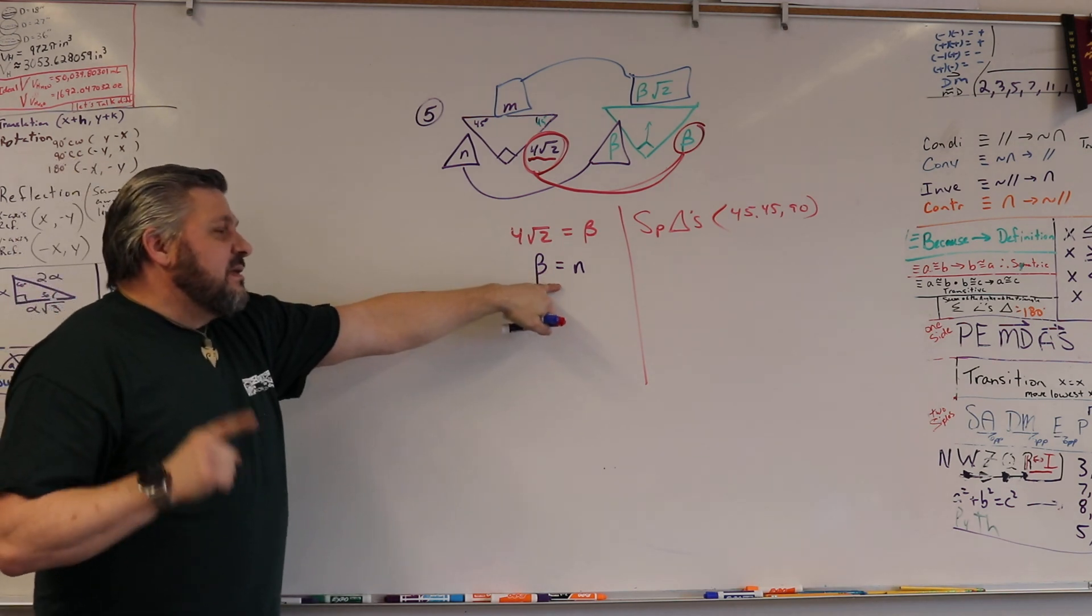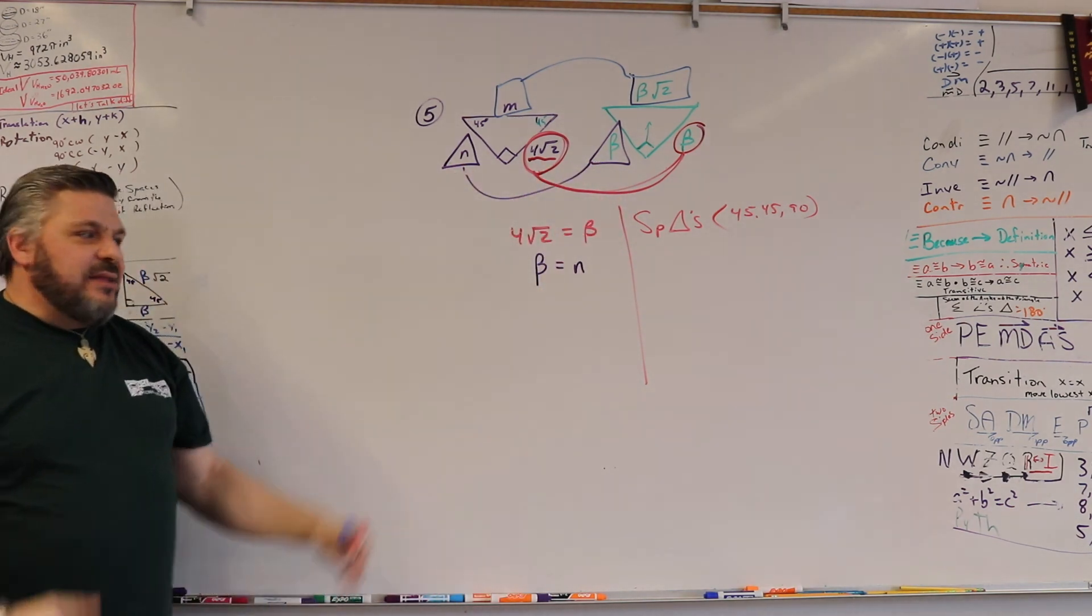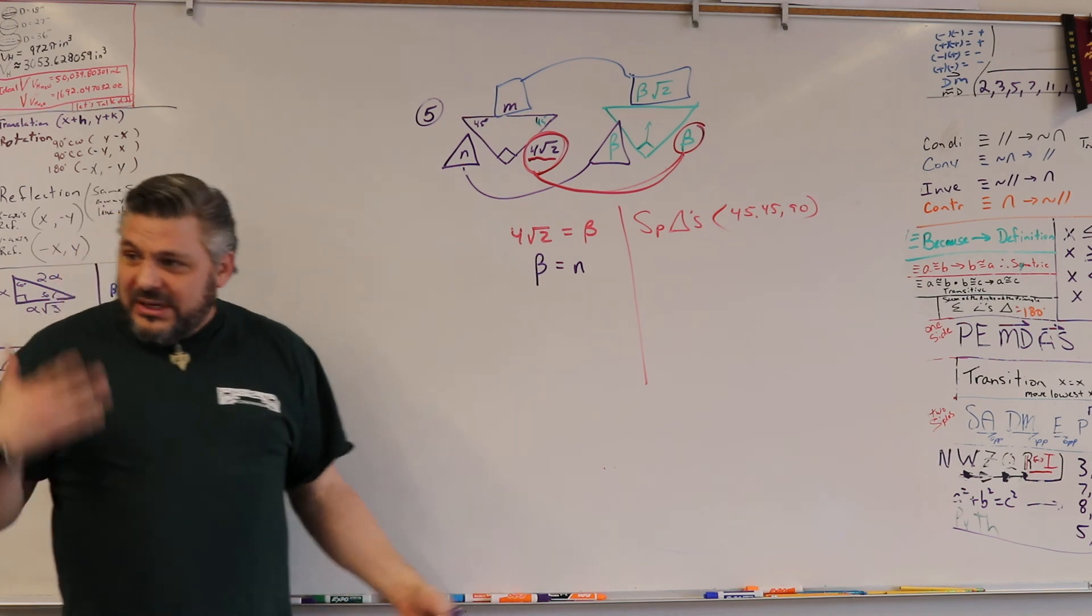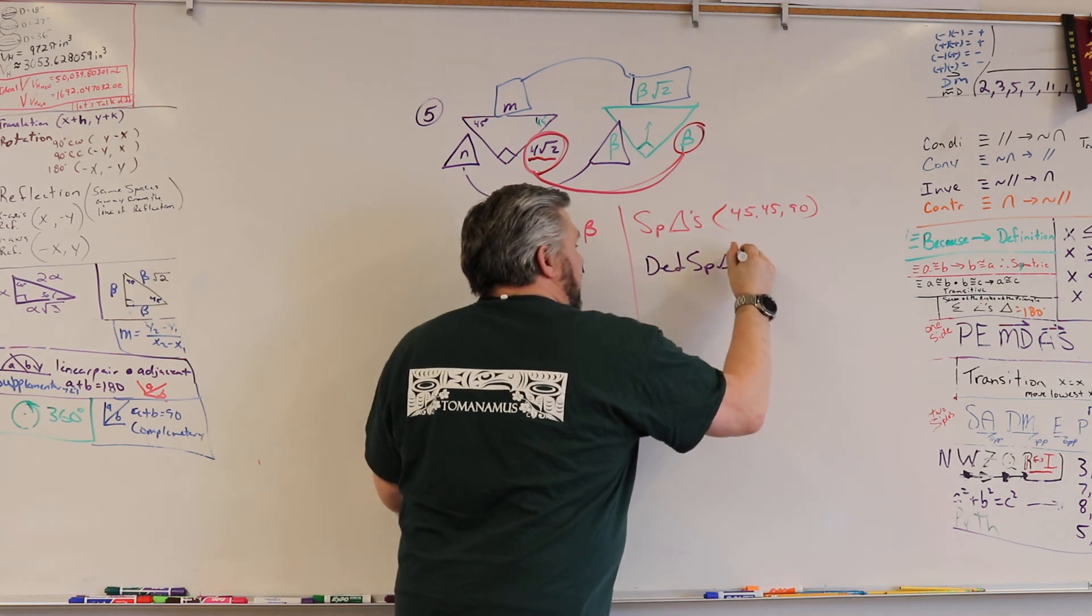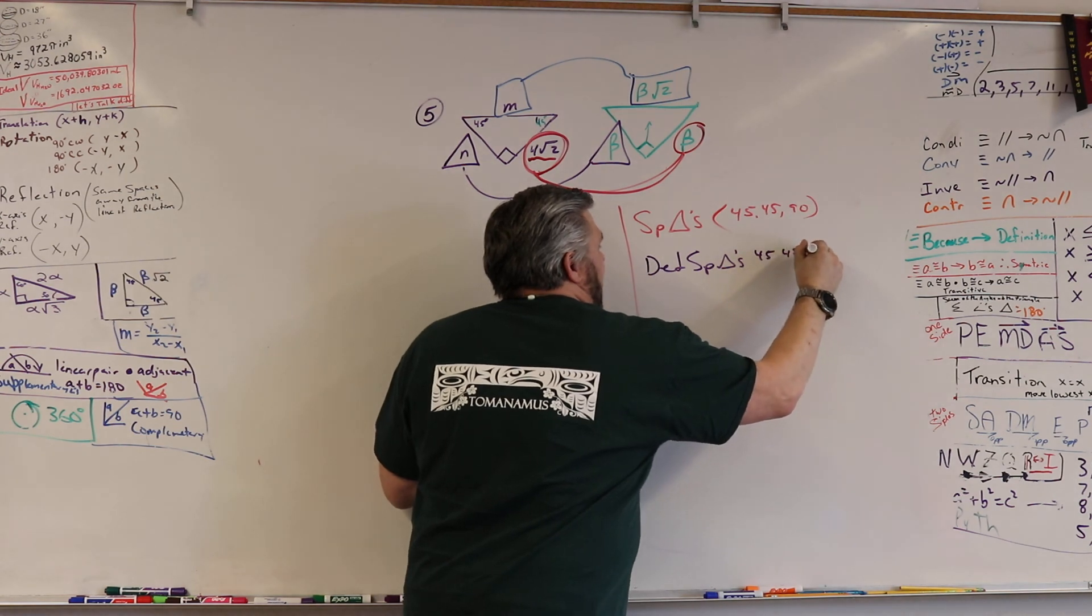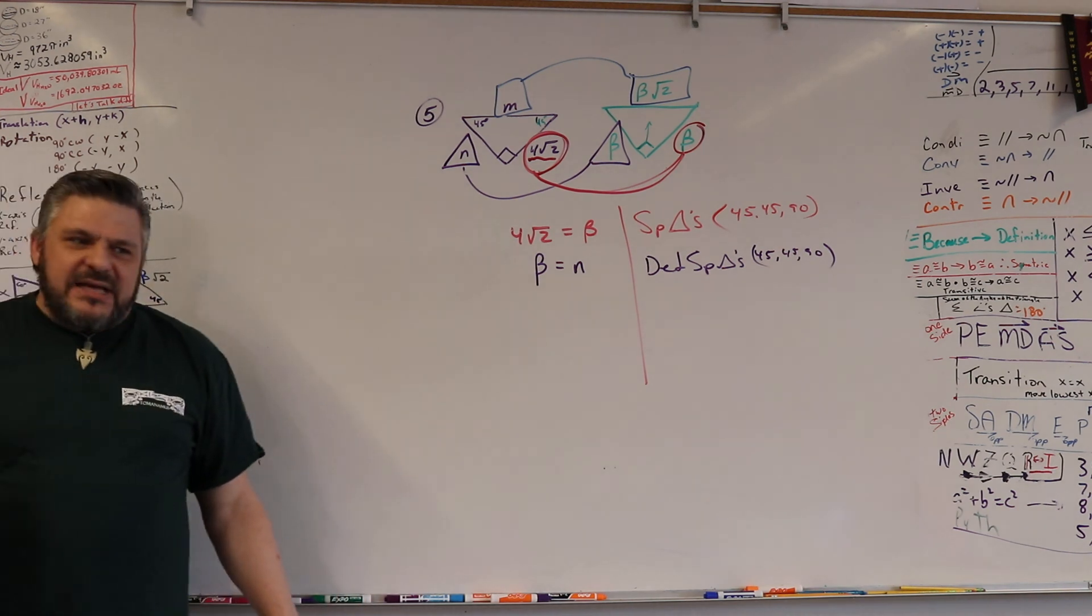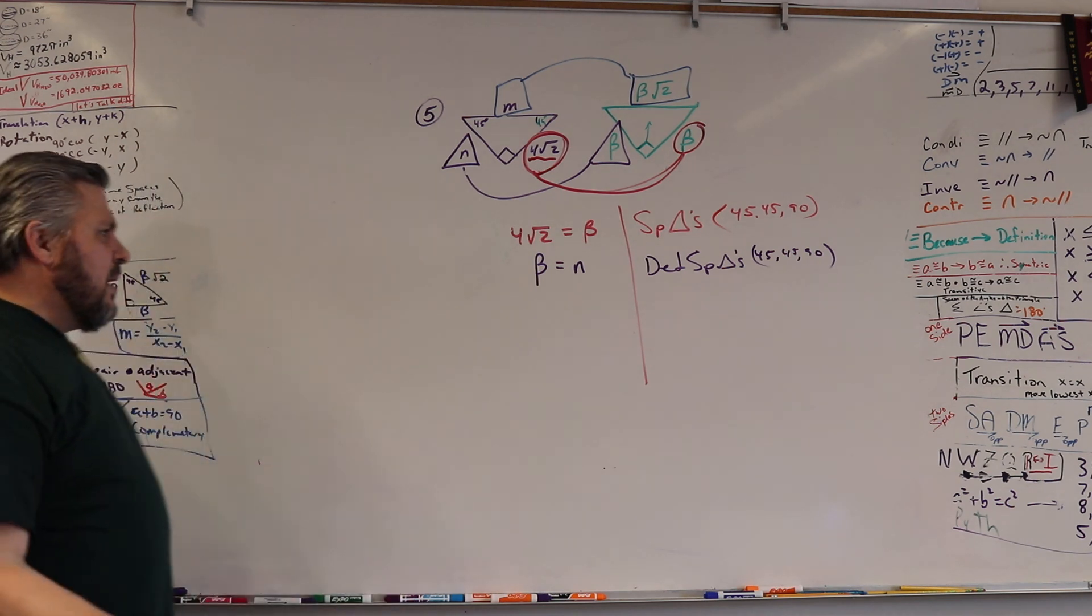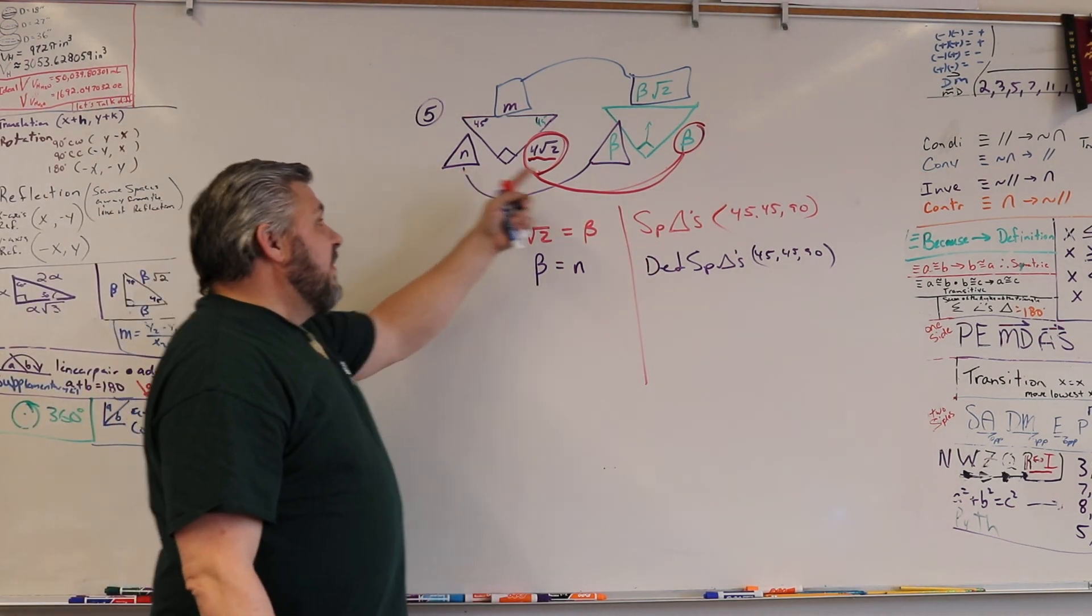You could have wrote N equals beta and then beta equals N, symmetric property. But in essence, we know that this is true. Why do we know that this is true? This is another special triangle. Yeah, when we're saying this side is equal to this side because it's a special triangle, then we're saying definition of special triangles. Which ones? Well in this case, 45-45-90. And you're going to do this, how many times will you have special triangles on there? How many sides to a triangle? Three. How many times are you going to see it? Three. Because if you find out three sides, you're going to use it three times. Does that make sense?